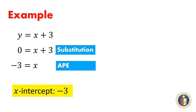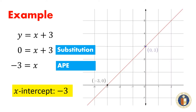Again, this can be easily verified graphically. Notice that the graph of the equation intersects the x-axis at the point (-3, 0). The x-intercept is really negative 3.